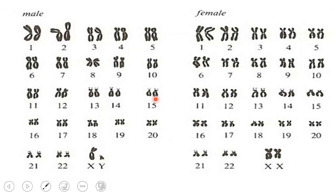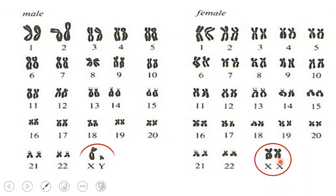Now let's look at male and female chromosomes. This set of chromosomes is taken from a female nucleus and this set from a male. If you look carefully, you will find one major difference between the two sets — it's the XX and XY. Males have X and Y chromosomes, while females have two X chromosomes.